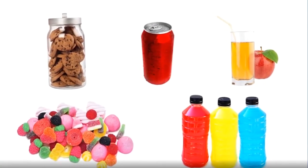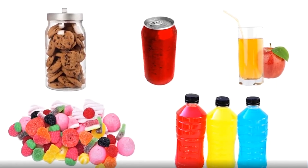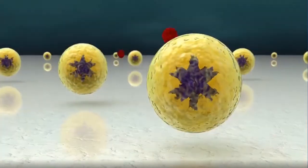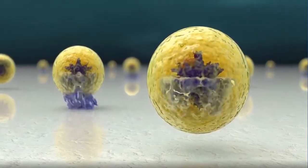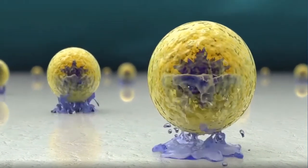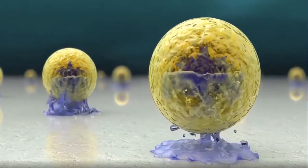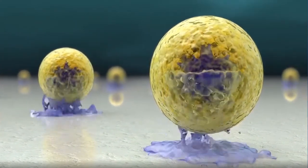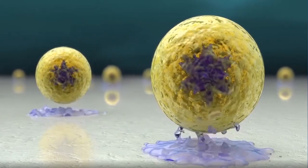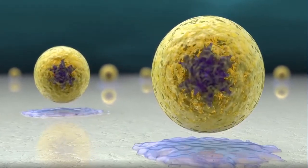Certain bacteria in the mouth use the sugars from these foods to produce acids. The acids released on the tooth enamel begin to destroy it, starting the process of demineralization. If remineralization doesn't occur, a cavity forms.